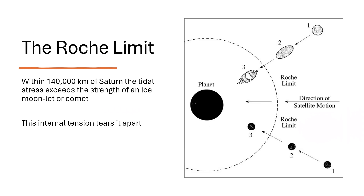We're talking about rings, not tides, but it is the tidal effect that is responsible for disrupting objects that get too close to giant planets. If you go within 140,000 kilometers of Saturn, the stress of the tides induced in the object will potentially exceed the strength holding the object together and it will be torn apart — hence creating all those ring particles. This limit is called the Roche limit.